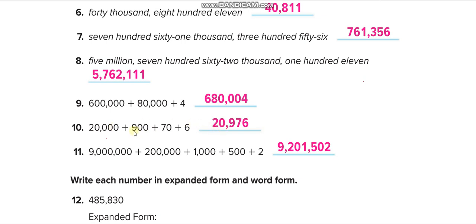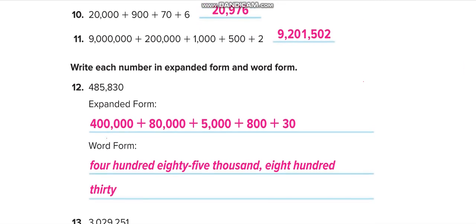20 is in the thousands period, 900 — 9 at the hundreds place, 70 — 7 at the tens place, and 6 at the ones place. Next: 9 million, 200 thousand — that's the millions period and thousands period. We don't have ten-thousands, so zero there, and 1 at the thousands place. Then 500 — 5 at the hundreds place, zero at the tens place, and 2 at the ones place.